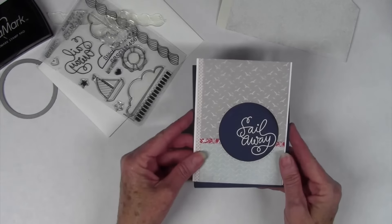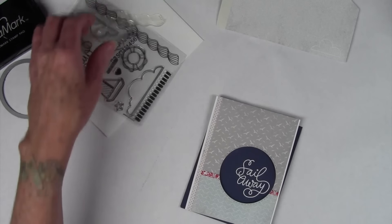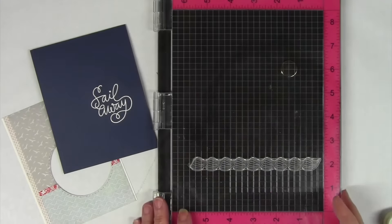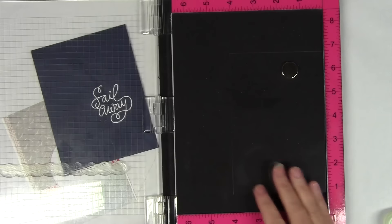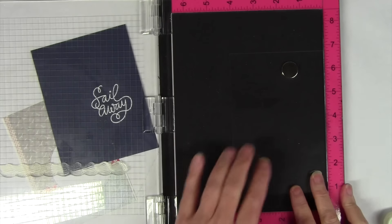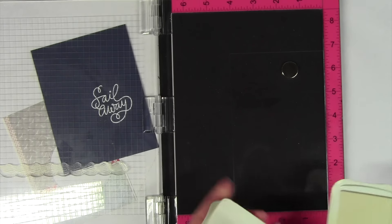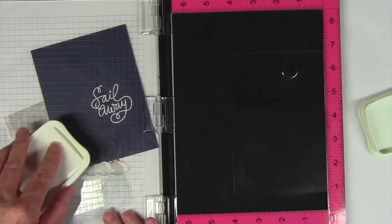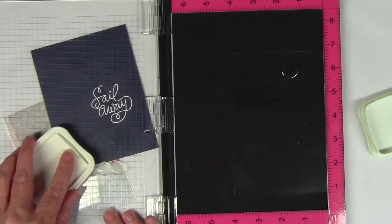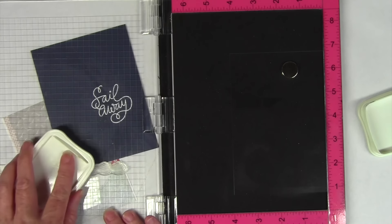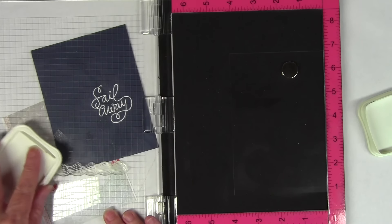I have cut a piece of acetate and I've also put the waves pattern image onto the MISTI. You can hardly see the acetate right there but I'll be using my white Stazon ink and I'm just going to ink up a portion of the stamp where I know it'll peek through that window so I don't necessarily have to get the entire stamp done.